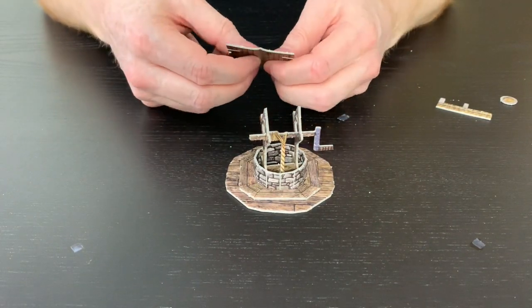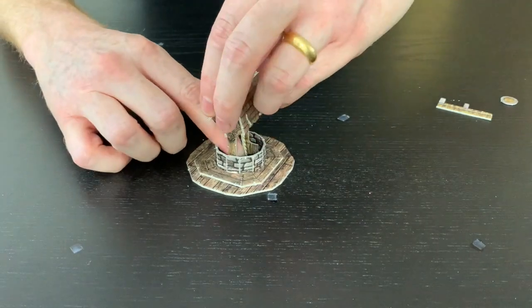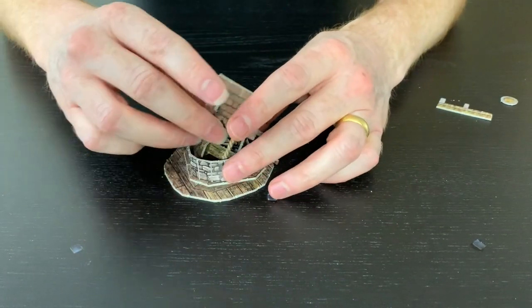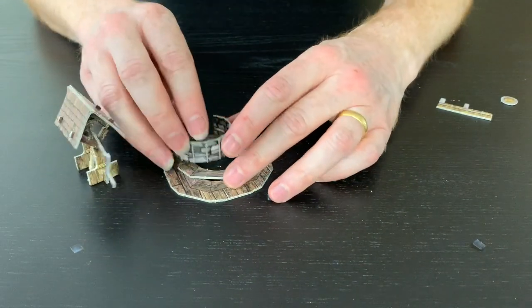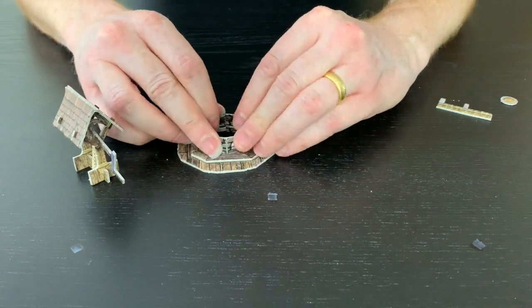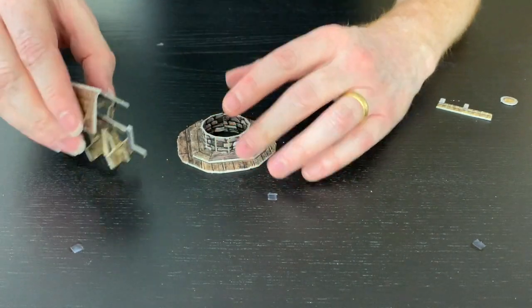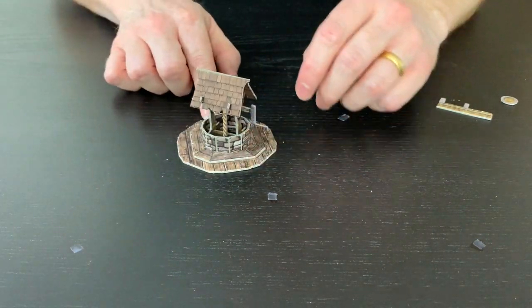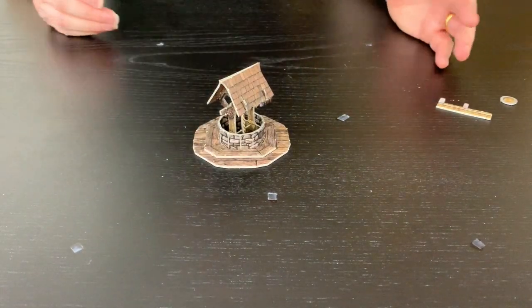We just need to pop this little roof on top, which has got a little half cut in it. I think in hindsight we should have put the roof on first. There you go, and here's your little well. Again, you're not going to want to take that apart. This is the classic point where you probably want to just glue some bits and pieces together.